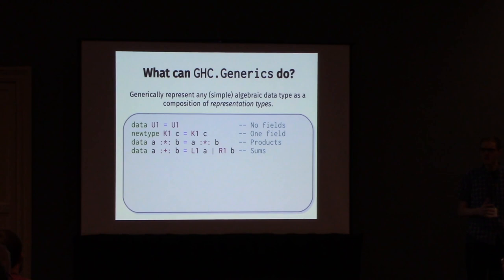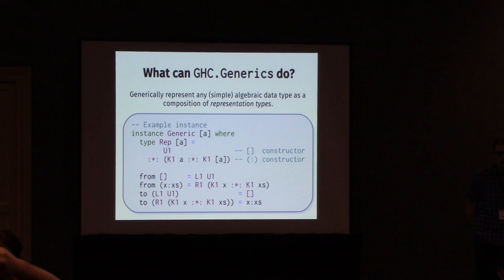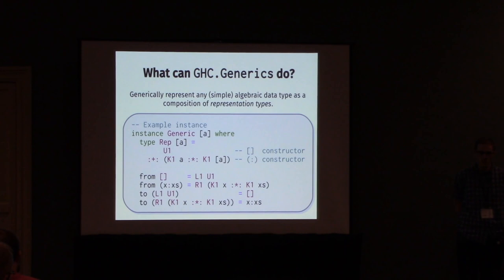These data types are in some sense reifying the general structure of any data type you can define in Haskell. If you have a constructor with no fields, you can represent that with a U1 type. If you have a single field, you can represent this with a K1 type. If you have multiple fields, you can use this product type to select between the two. And if you have multiple constructors, then you have a sum-looking data type to select between the constructors. Here's one example of a Generic instance that GHC could derive for you for the list data type. List has two constructors - Nil and Cons. Nil has no fields so we use U1, and Cons has two fields of type A and List of A, so we use K1 for each and a product to combine those two. Defining from and to is pretty mechanical, as you would expect.